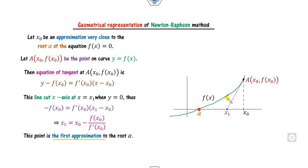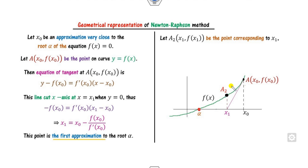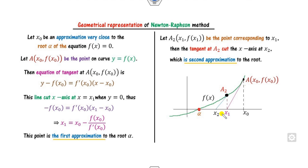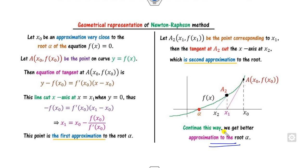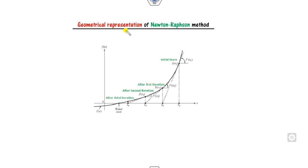Now x₁ is our new approximate root. Taking point a₂ with coordinates (x₁, f(x₁)), we draw the tangent again. It cuts the x-axis at x₂, the second approximate root. Similarly, continuing this process through a₃ to get x₃ and so on, we obtain better and better approximate roots of f(x) = 0. Each new tangent brings us closer to the exact root.